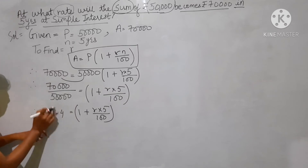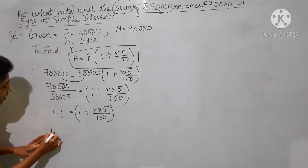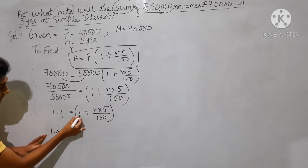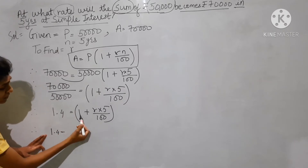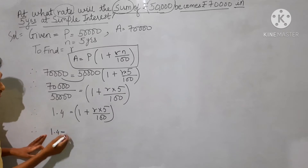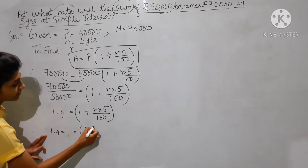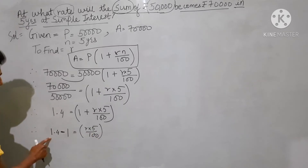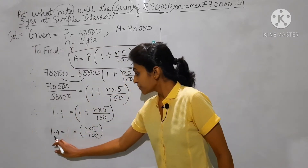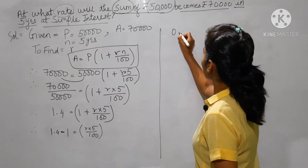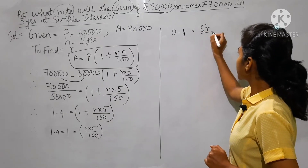Now bring the 1 outside the bracket. 1.4 minus 1 is equals to r into 5 divided by 100. The sign changes — it becomes negative — so 1.4 minus 1 gives us 0.4. Therefore 0.4 is equals to 5r divided by 100.